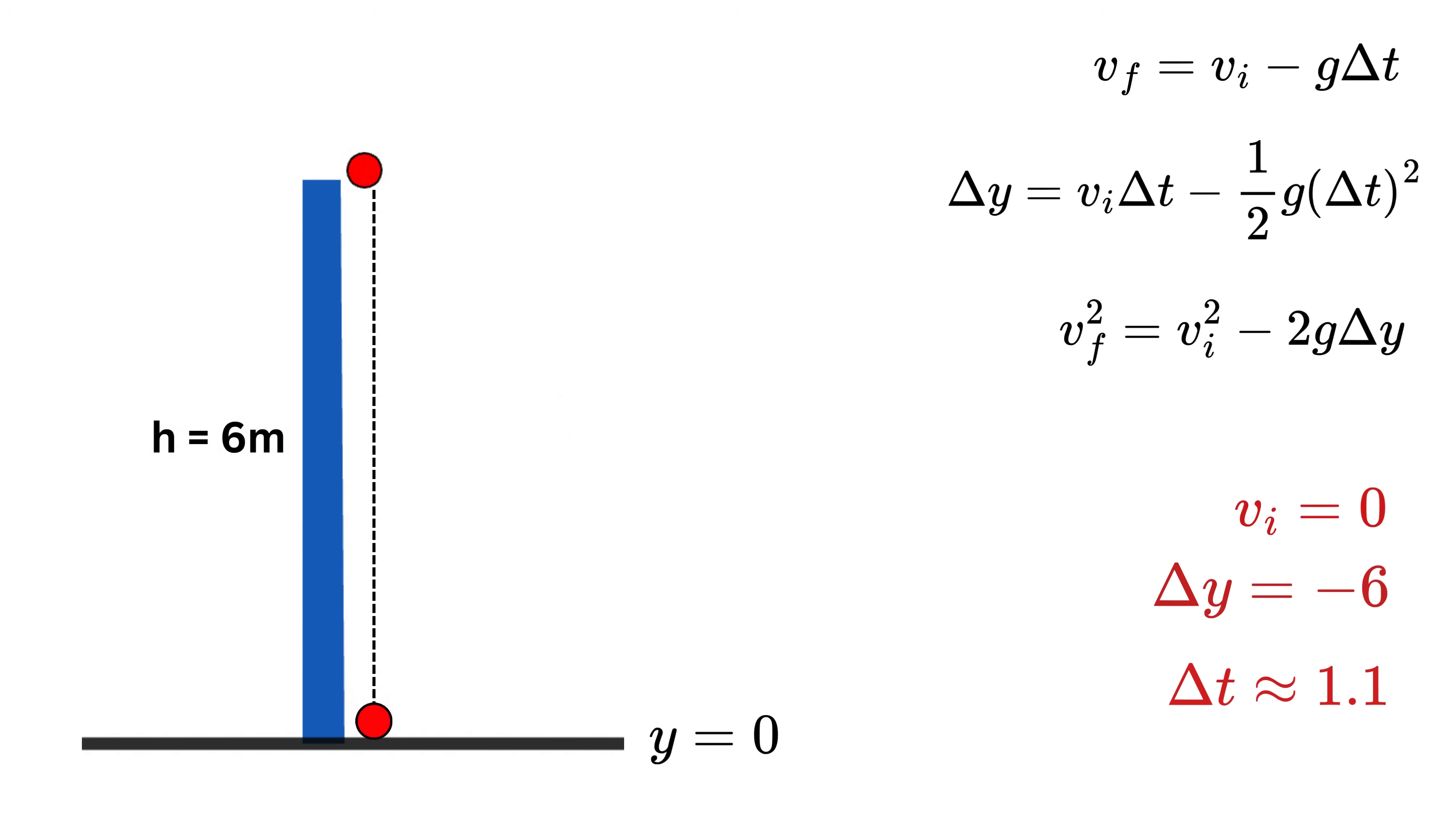The second question asks how fast the ball is moving just before it hits the ground. Now that we know the time of the entire free fall, we can use the relation between velocity, acceleration, and Δt. Substituting the known values into the expression gives a final velocity of about minus 10.8 meters per second. The negative sign tells us the velocity is directed downward, which matches our physical expectation. This completes the solution of the first free fall problem, where an object is simply dropped from rest.